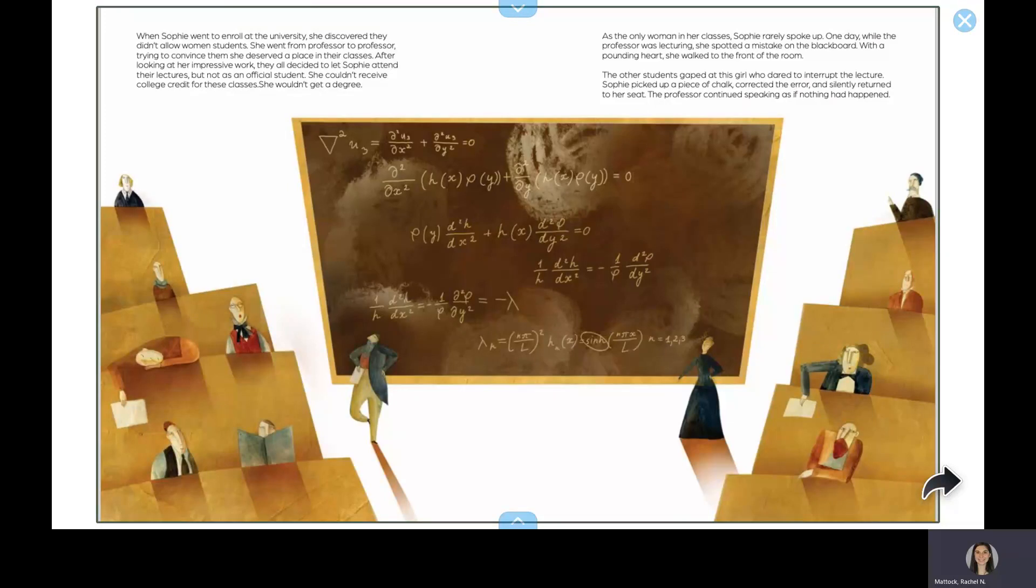As the only woman in her classes, Sophie rarely spoke up. One day, while the professor was lecturing, she spotted a mistake on the blackboard. With a pounding heart, she walked to the front of the room. The other students gaped to this girl who dared to interrupt the lecture. Sophie picked up a piece of chalk, corrected the error, and silently returned to her seat. The professor continued speaking as if nothing had happened.